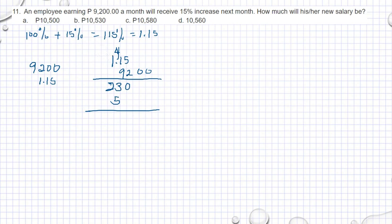And then we have 13, carry 1, and then we have 10. So 0, 0, 0, 8, 5, and then 10,000. And then I have two decimals, that is 10,580 pesos. Then it should be C.